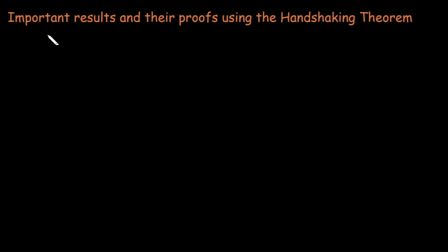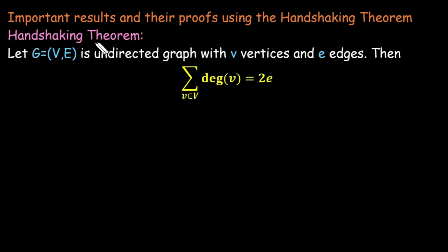In this video we are going to learn about some important results and their proofs based on the fundamental concept in graph theory, that is the handshaking theorem. The handshaking theorem states that for any undirected graph, the sum of degrees of all the vertices is equal to twice the number of edges.